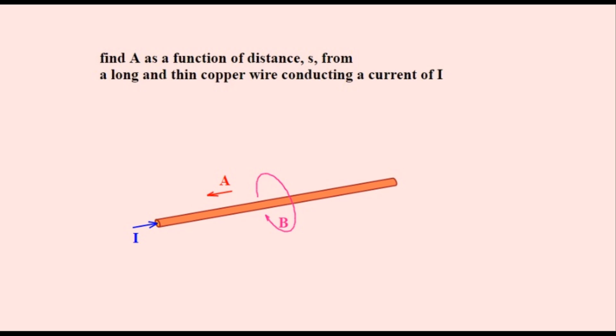The last example is the A field in the presence of a copper wire conducting a current of I. This will need a different approach since B varies everywhere. Just like in the last three examples, we will use this equation to start to solve for A. Since B curls around the wire, it only has a component in the C direction circling the wire, so that only this part of the curl of A in cylindrical coordinates is used.